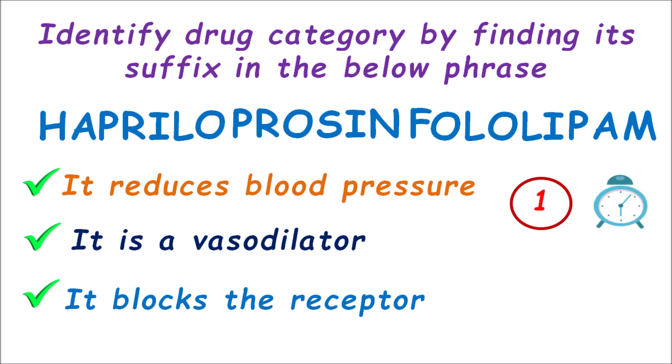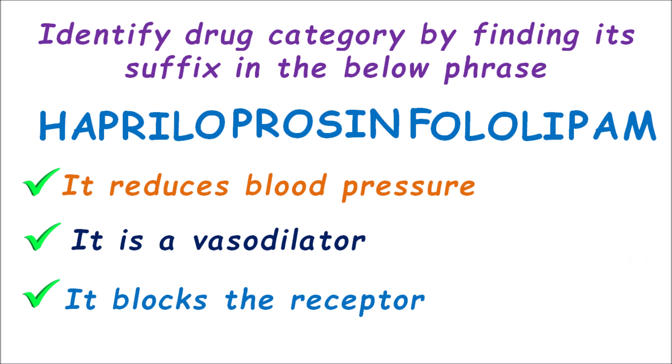You have five seconds to spot the right answer, or you can pause the video and think about the question. Now let us go with the solution. Let us identify the different drug suffixes incorporated within this phrase. We can identify: -pril (ACE inhibitors), -osin (alpha blockers), -olol (beta blockers), and -pam (benzodiazepines). So we can identify four types of drug suffixes within this phrase.